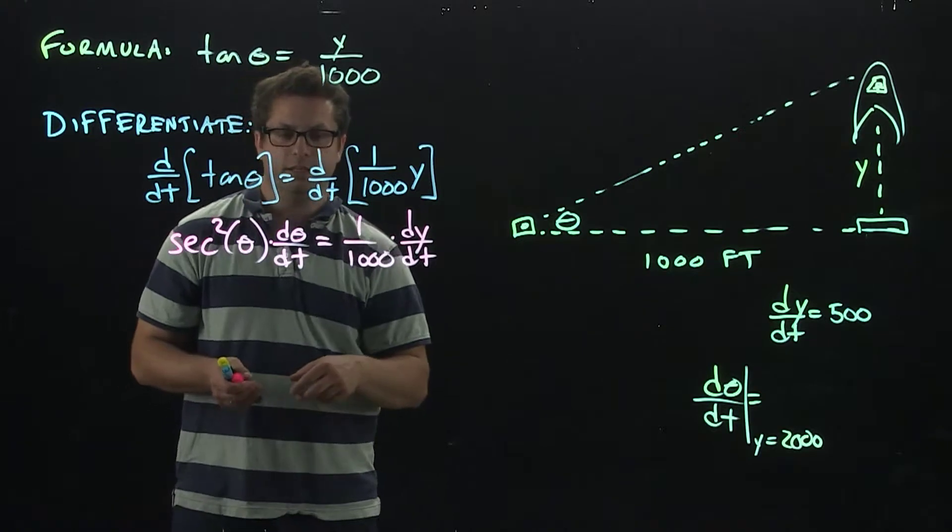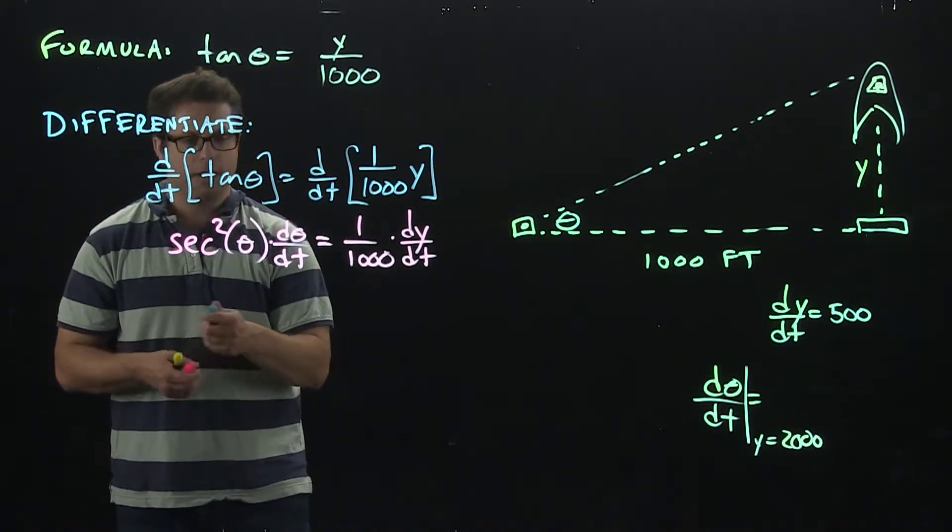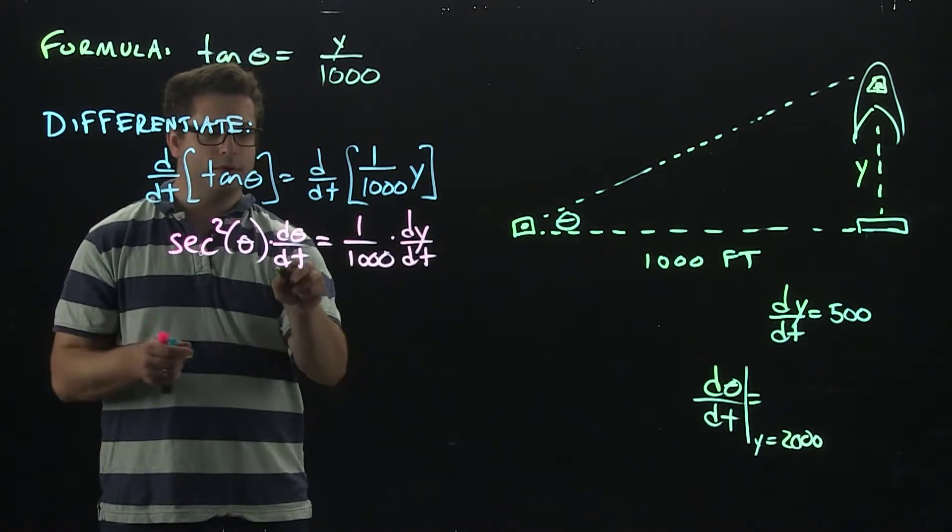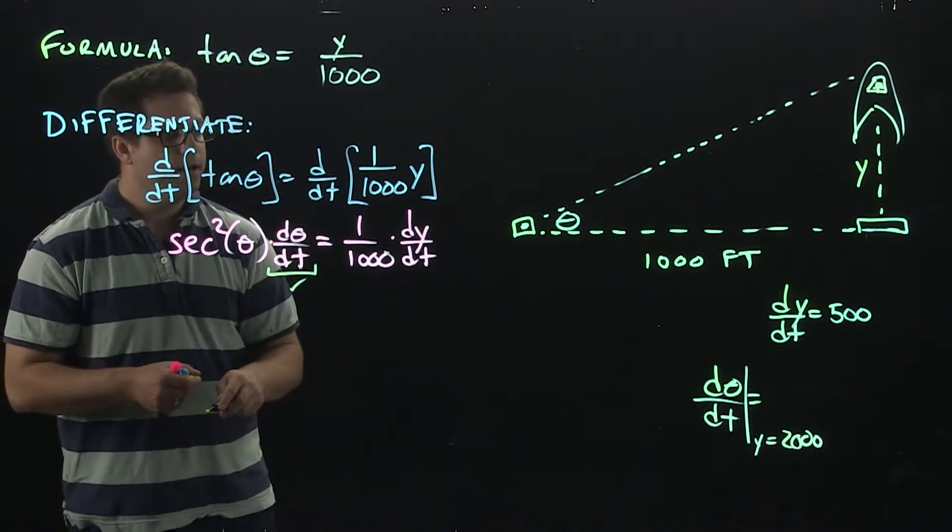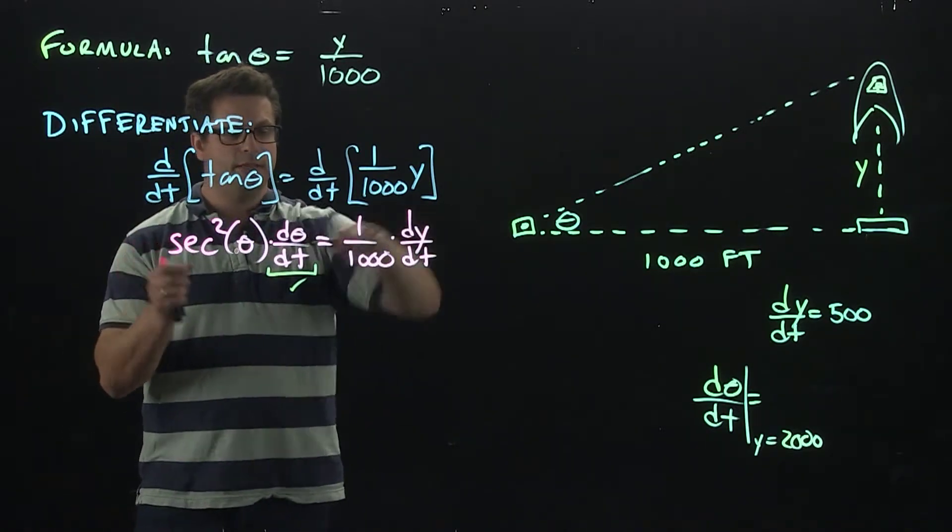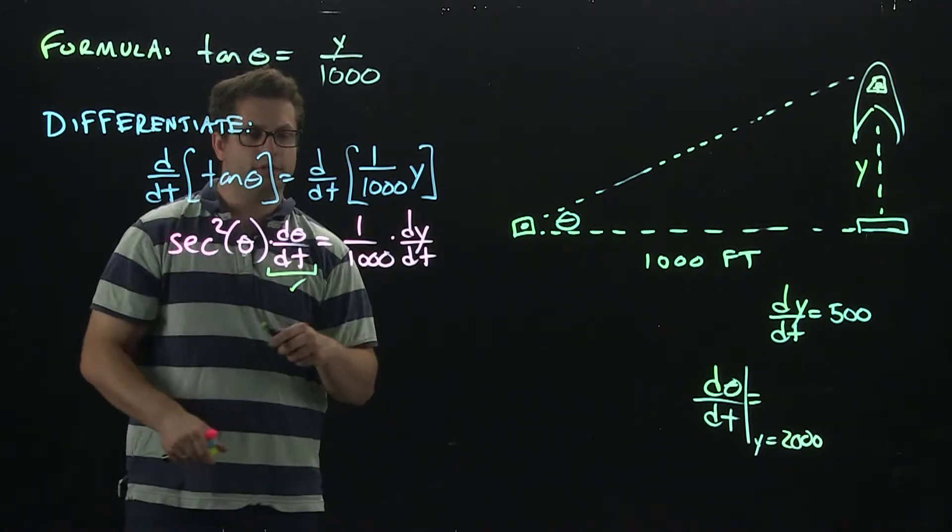Now that I've taken the derivative, let's figure out what we need. I am trying to solve for this d theta/dt right here. That's what I want. So let's go ahead and divide the secant squared over to the other side.